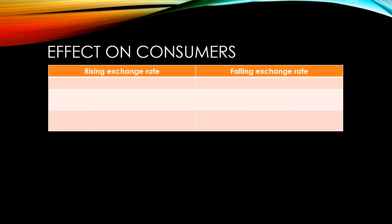Let's have a look at the effect on consumers. If we consider a rising exchange rate, consumers will be able to benefit from cheaper imported goods. This might mean better quality goods and a wider selection of goods at a better price. All of these things will mean that consumers have got more money left over and are happier with their goods, meaning a better quality of life. On the other hand, if we have a falling exchange rate, then imported goods become more expensive and consumers will not be able to afford as many of them. This means for many people there will be less choice over goods and a higher price, meaning they have less money left over and they're not as happy with the goods that they buy.